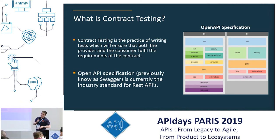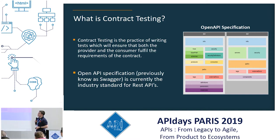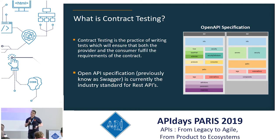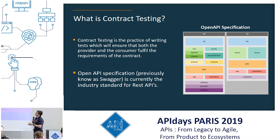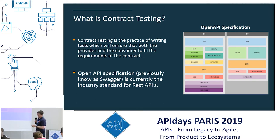You might build out the definition itself, and then the requirements between the provider and the consumer will be established at that stage. With contract testing, it's basically the practice of writing the tests which ensure that both the provider and the consumer will be able to fulfil their requirements. What we're looking at here is the OpenAPI specification — the industry standard at the moment for REST APIs and for contract testing.